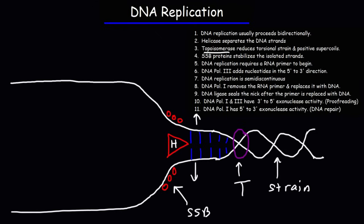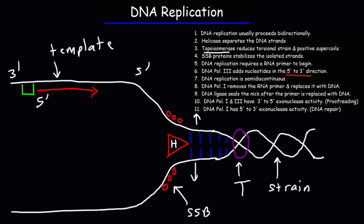DNA replication requires an RNA primer to begin. The RNA primer is basically a sequence of RNA nucleotides. DNA polymerase 3, once it sees the RNA primer, begins to synthesize the new strand in the 5' to 3' direction. The template strand runs in the 3' to 5' direction, but DNA polymerase 3 builds the new strand in the 5' to 3' direction — DNA polymerase 3 adds nucleotides in the 5' to 3' direction. The enzyme that creates the primer is known as primase.